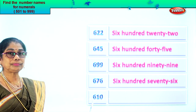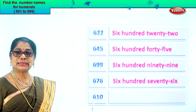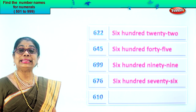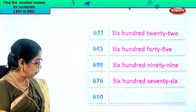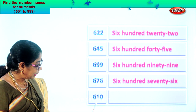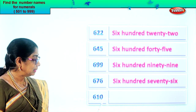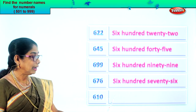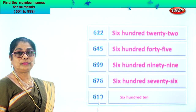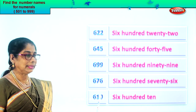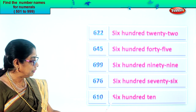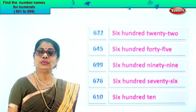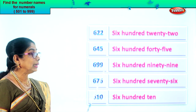Next we have another numeral: six, one, zero. Zero in the ones place, one in the tens and six in the hundreds place. Let's read the numeral: six hundred ten. First we write six hundred, then we write ten. That's it — six hundred ten. No ones place, nothing is there. Six hundred ten.